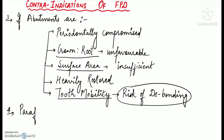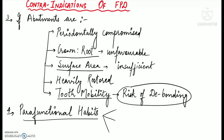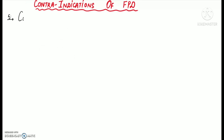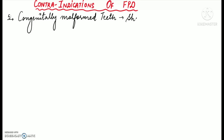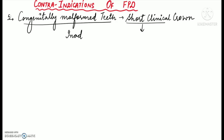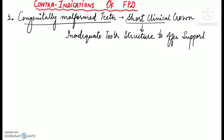A fixed partial denture is not indicated in patients with parafunctional habits such as bruxism, clenching, or nail biting. FPD is generally not indicated for patients with congenitally malformed teeth, as these teeth have short clinical crowns which do not have adequate tooth structure to offer support to the prosthesis. It is also contraindicated for those allergic to base metal alloys such as nickel, although metal-free prostheses can be given to such patients.